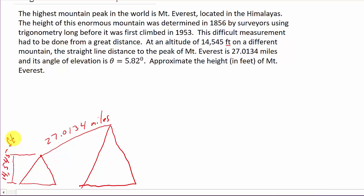So now it also says, and its angle of elevation is θ = 5.82°. Alright, so the angle of elevation here is 5.82. Remember, angle of elevation is measured off the horizontal. And here's your angle. This is your angle of elevation measured off the horizontal.